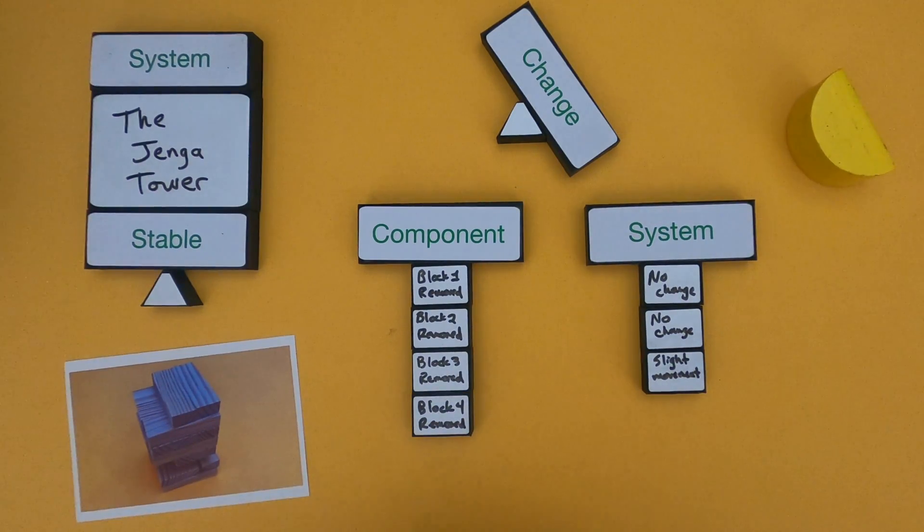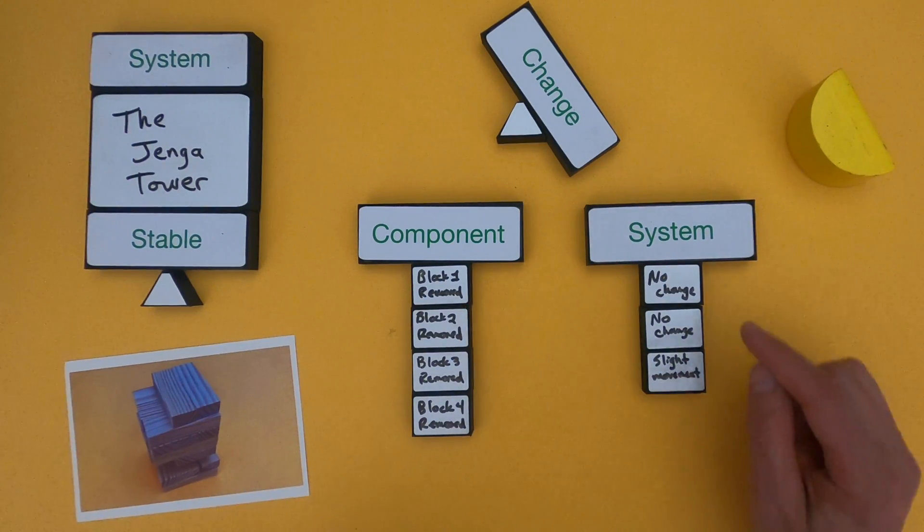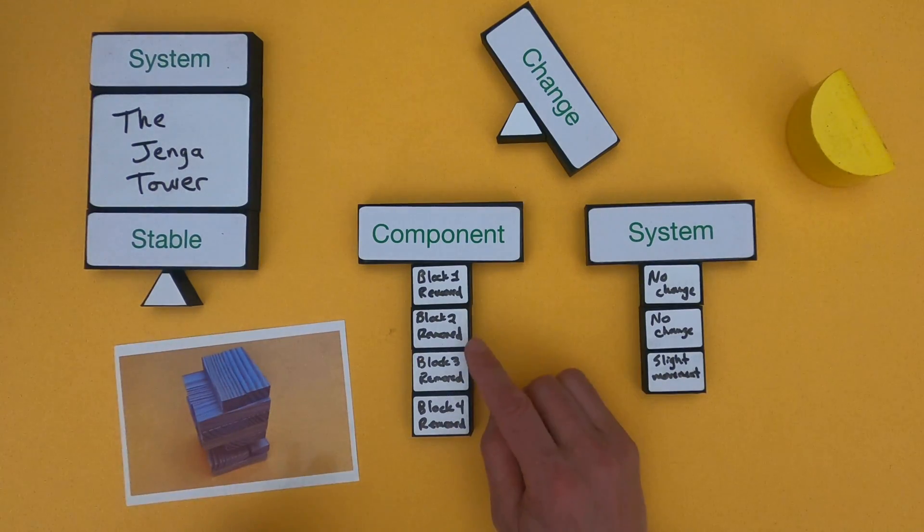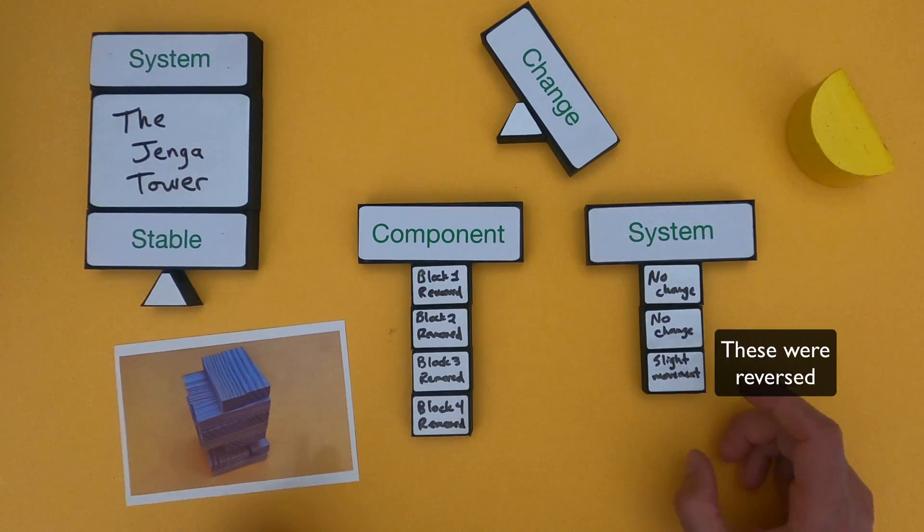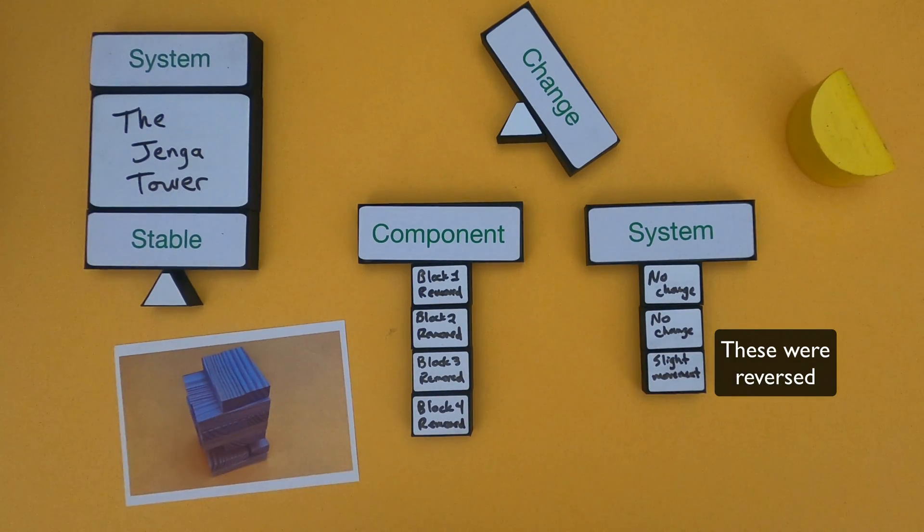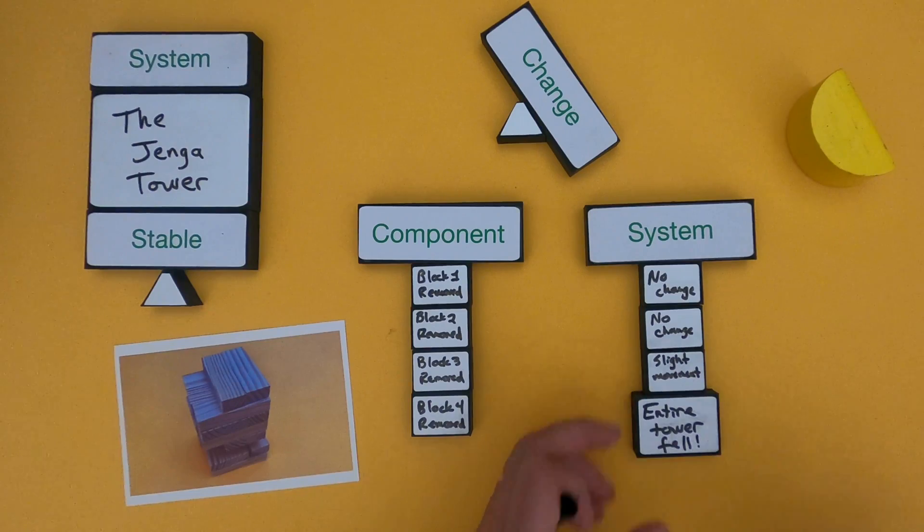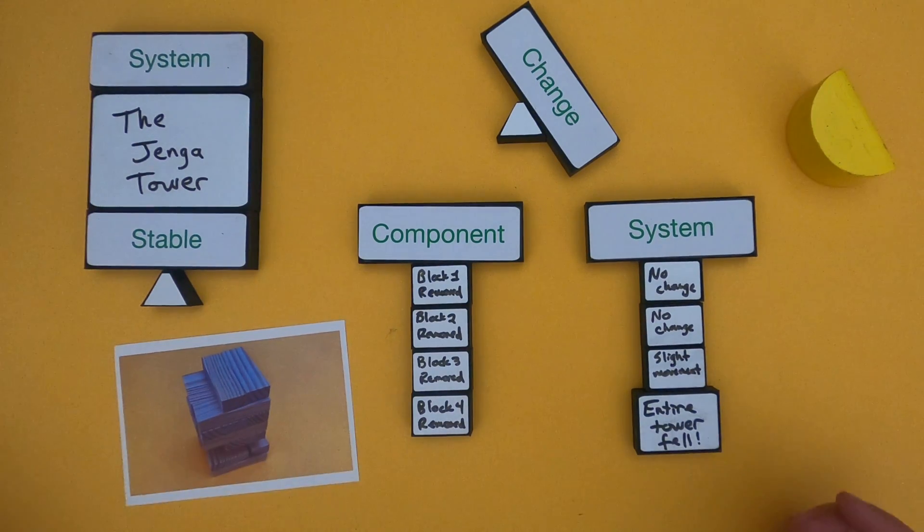To summarize what I saw happening - I removed block one and there was really no change in the overall tower of the Jenga tower. I then removed block two, there was no change. I removed block three and there was slight movement if I remember right, there was just one block that started to move. Then finally I removed block four and then what happened? When I removed block four then the entire tower fell.